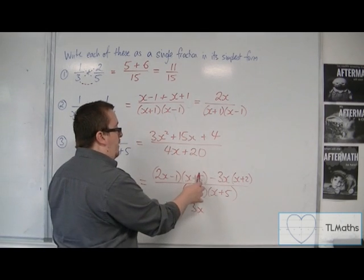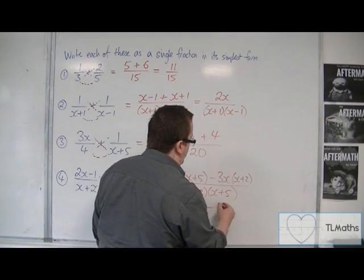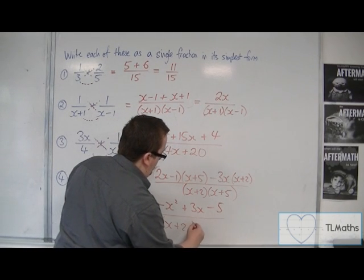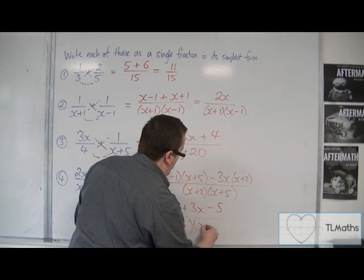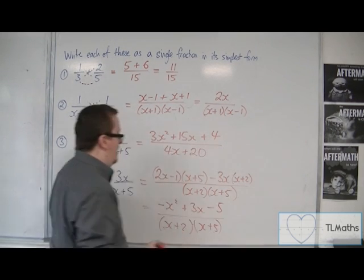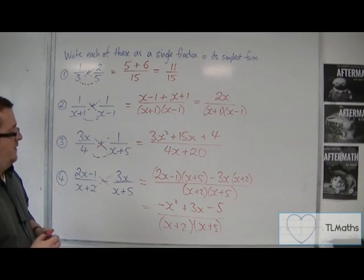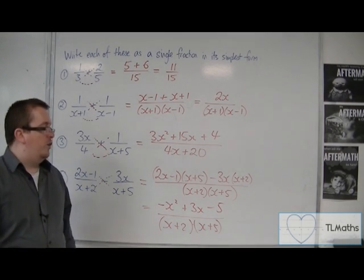And then we've got minus 1 times 5, so minus 5. So that's what's on the numerator. We've got x plus 2, x plus 5 in the denominator. OK, and that's as far as I'm going to go with that.